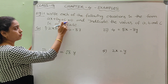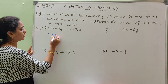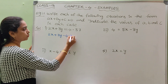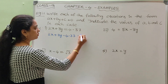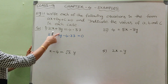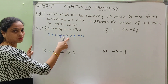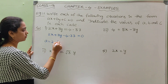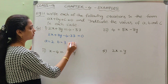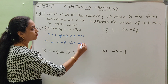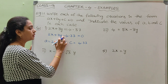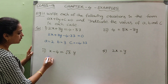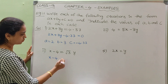We have to write it in the form ax plus by plus c equals to 0. So 2x plus 3y — the right side value 4.37 will come to the left side as minus 4.37 equals to 0. This is in the form of ax plus by plus c, where c is the constant value. So a equals to 2, b equals to 3, c equals to minus 4.37. Sign is also important — it is minus 4.37.